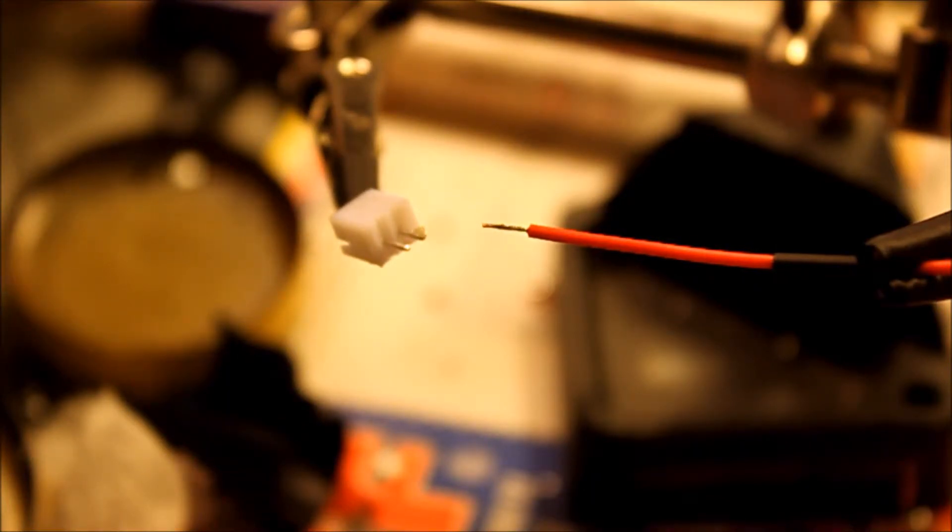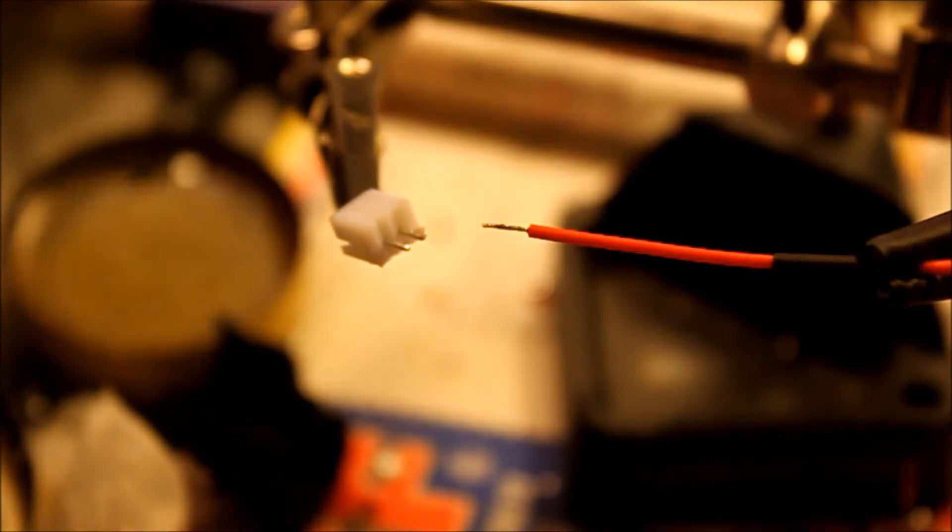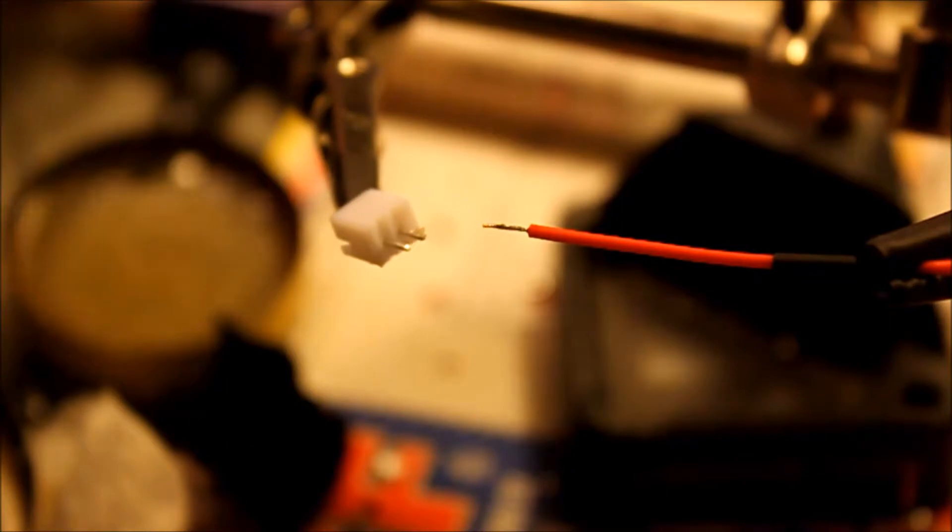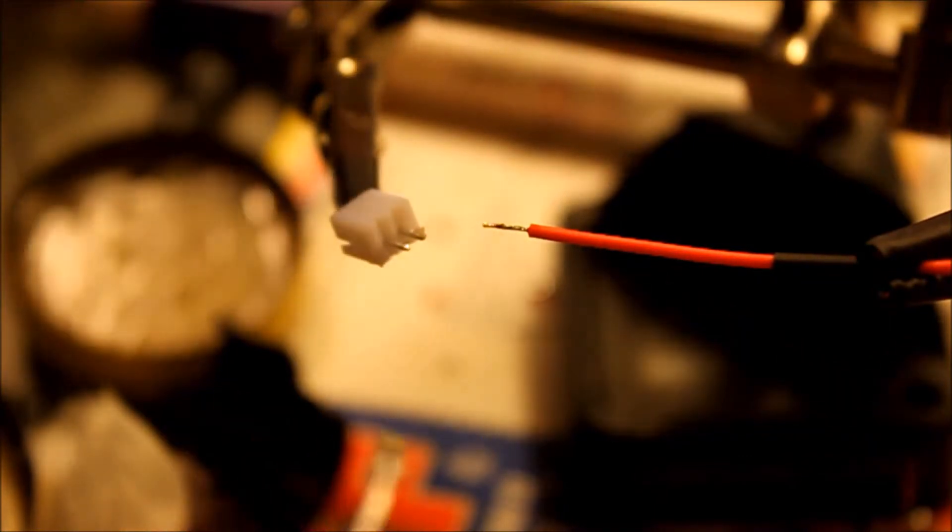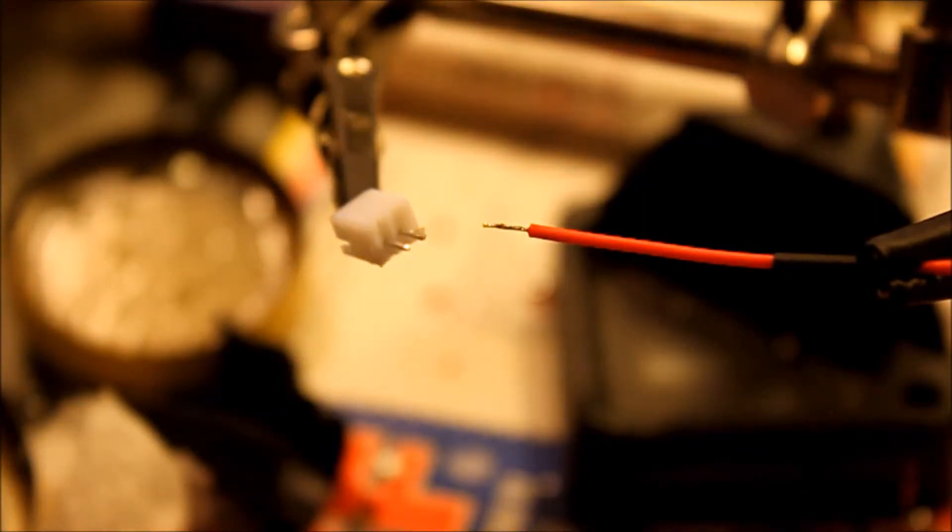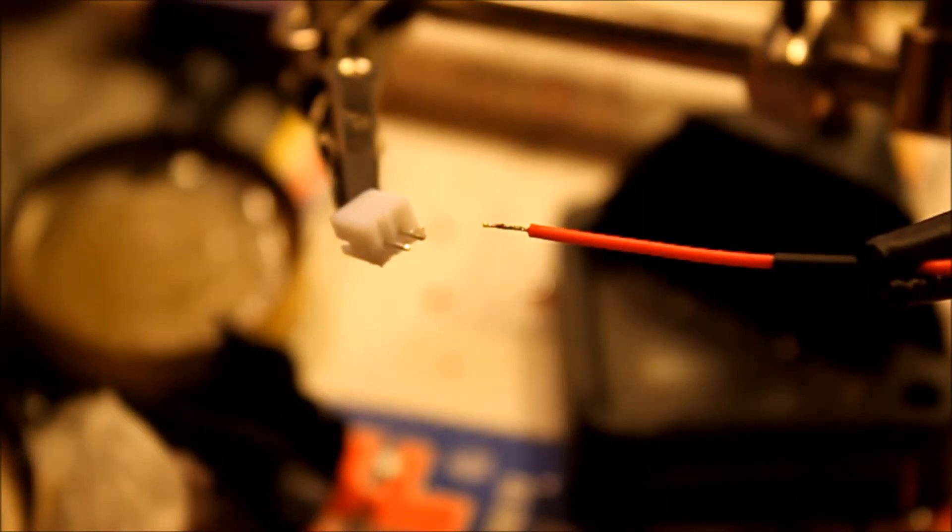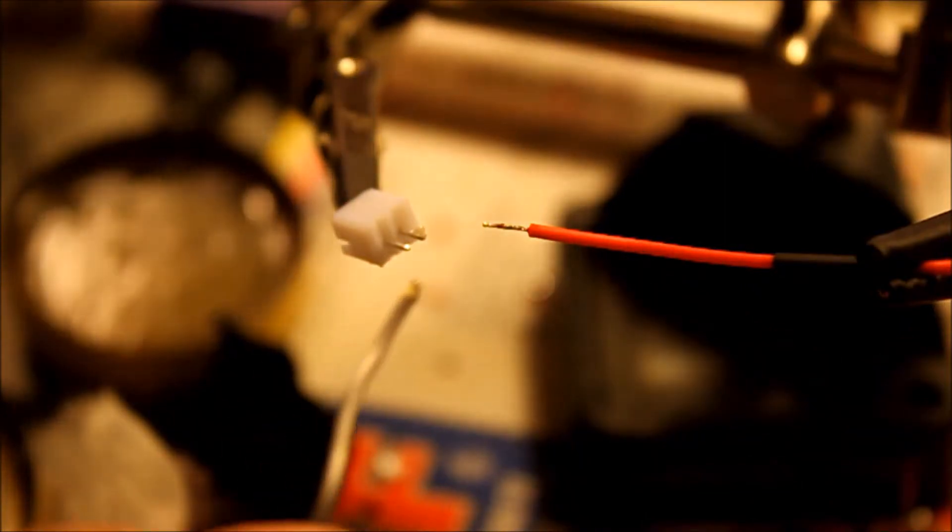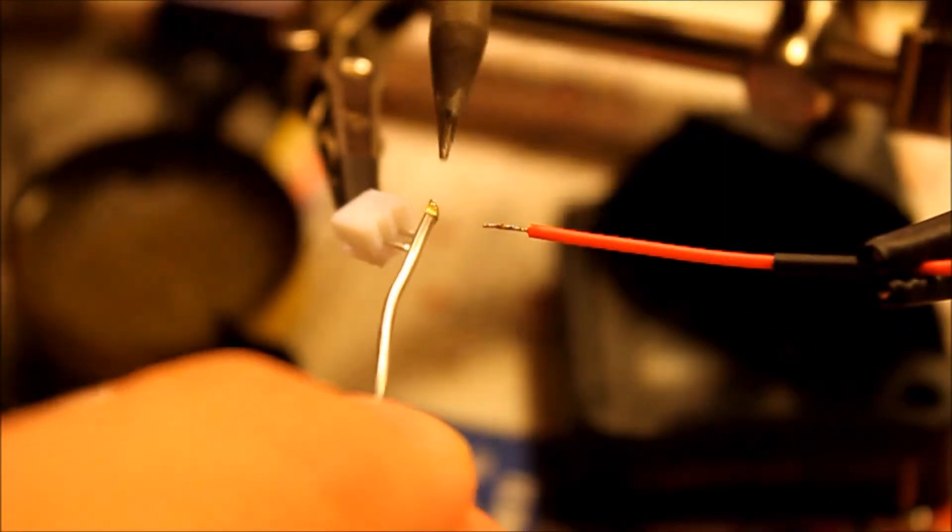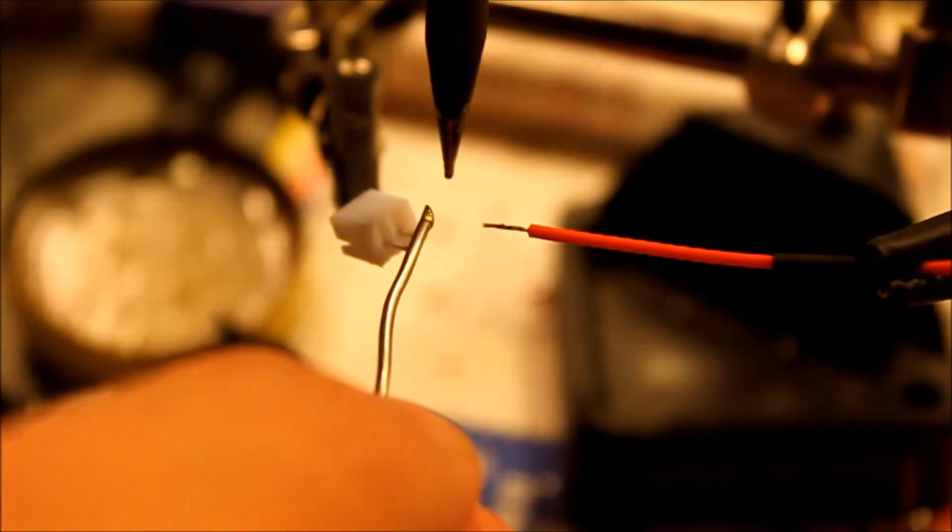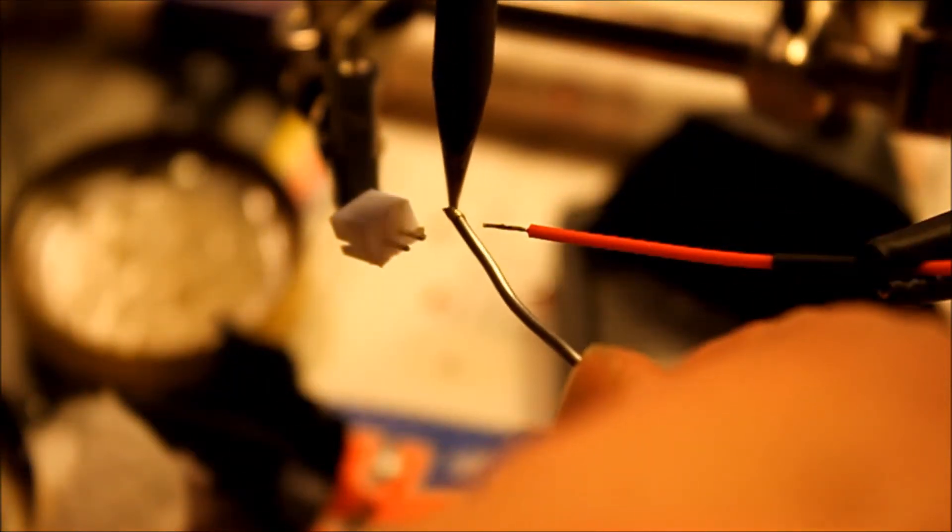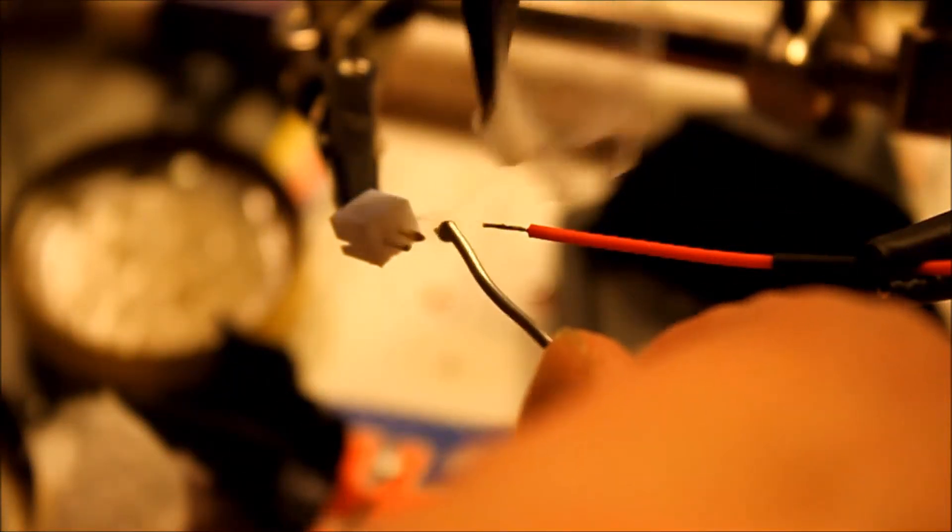All right. You also want to tin the connection too. This is a very tiny connector. So you want to position. And see this glob of mess? You want to clean it with a wire brush. You're going to tin this too. Gently. There you go. Tinned.